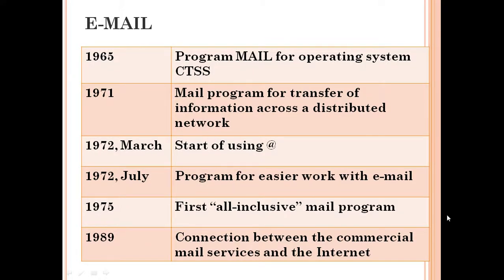Email history. In 1965, the program Mail for operating system CTSS. In 1971, a mail program for transfer of information across a distributed network. In 1972, March, start of using the symbol named 'at'. In 1972, July, a program for easier work with email. In 1975, the first all-inclusive mail program. In 1989, connection between the commercial mail services and the Internet.